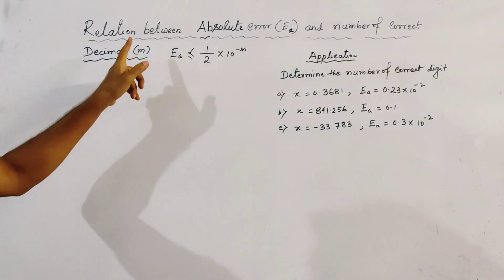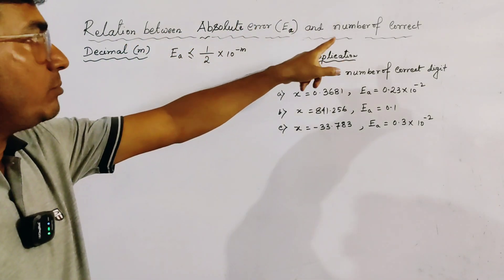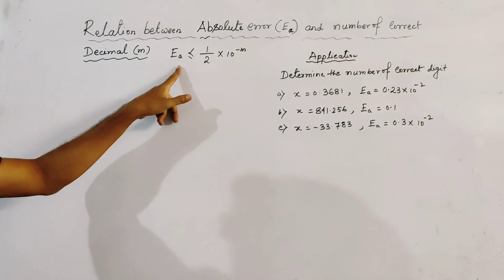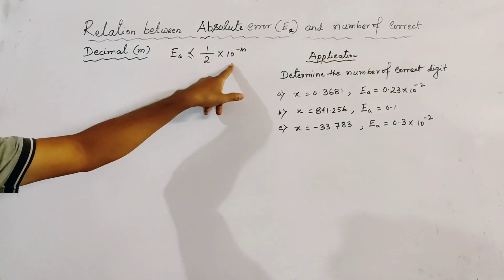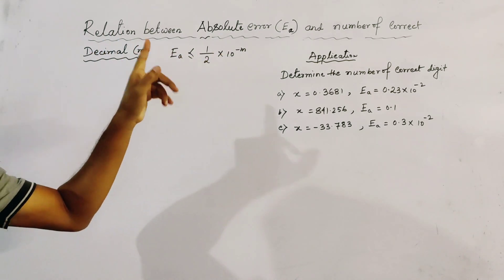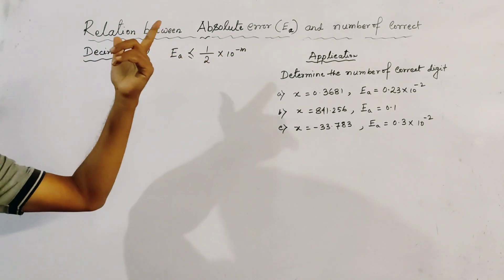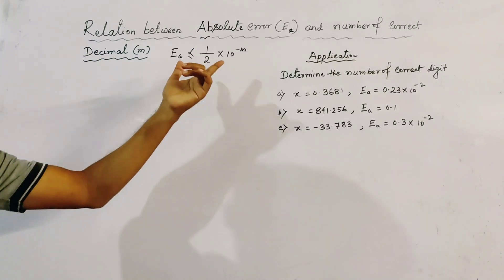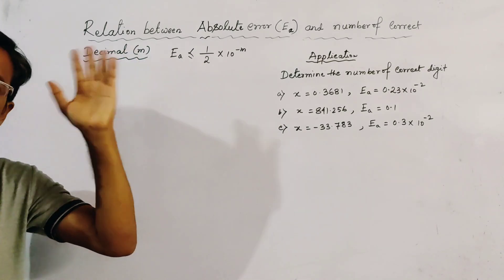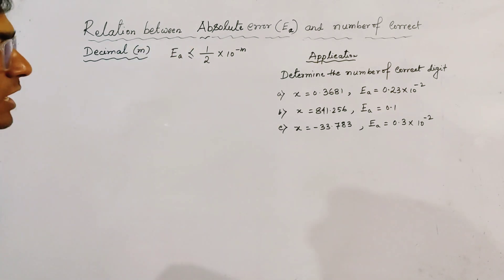The relation between absolute error ea and the number of correct decimal places is: ea ≤ (1/2) × 10^(-m), where m is the number of correct decimal places. This is a very important relation of numerical analysis, already discussed in a previous video. Now its applications are as follows.